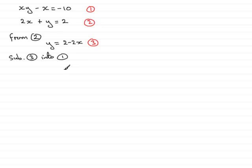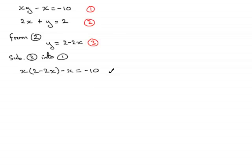Tell the reader what you're doing — it makes it easy to follow. So we now have x times y, but in place of y we substitute (2 minus 2x). So we have x times (2 minus 2x) minus x equals minus 10. We now have an equation in terms of one variable, x, so we can solve it. Expanding the bracket gives 2x, and x times minus 2x is minus 2x squared, then minus x on the end equals minus 10.